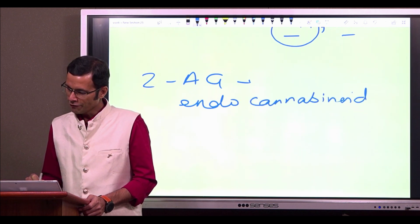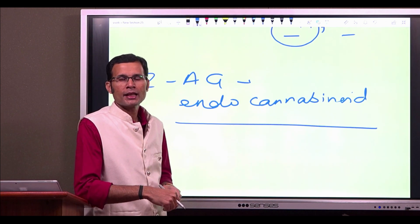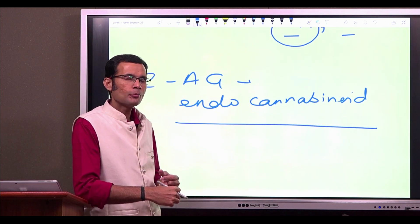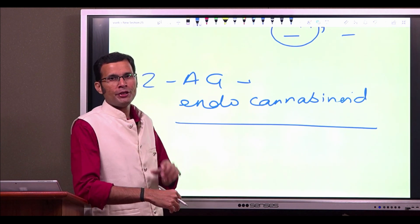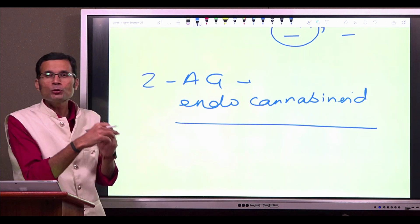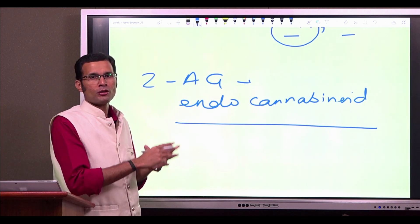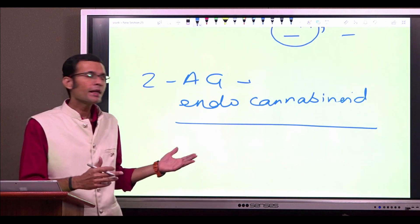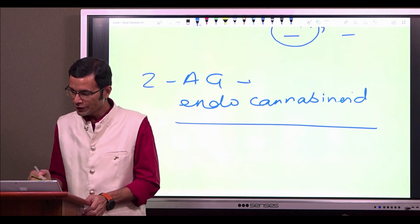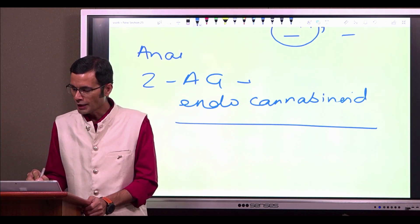We are already aware that there are endogenous opioids in our body, endogenous cannabinoids in the body. So this is an endogenous cannabinoid. Endocannabinoid, 2-arachidonoyl-glycerol. Well, the other endocannabinoid is anandamide.